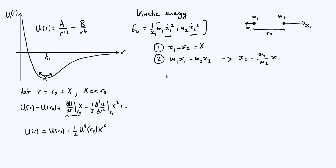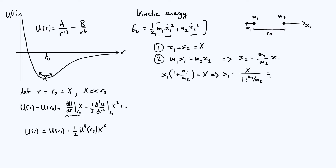Substituting x₂ = (m₁/m₂)x₁ into x₁ + x₂ = X gives x₁(1 + m₁/m₂) = X, so x₁ = m₂X/(m₁ + m₂). Then x₂ = m₁X/(m₁ + m₂). We now have both individual displacements expressed in terms of capital X.